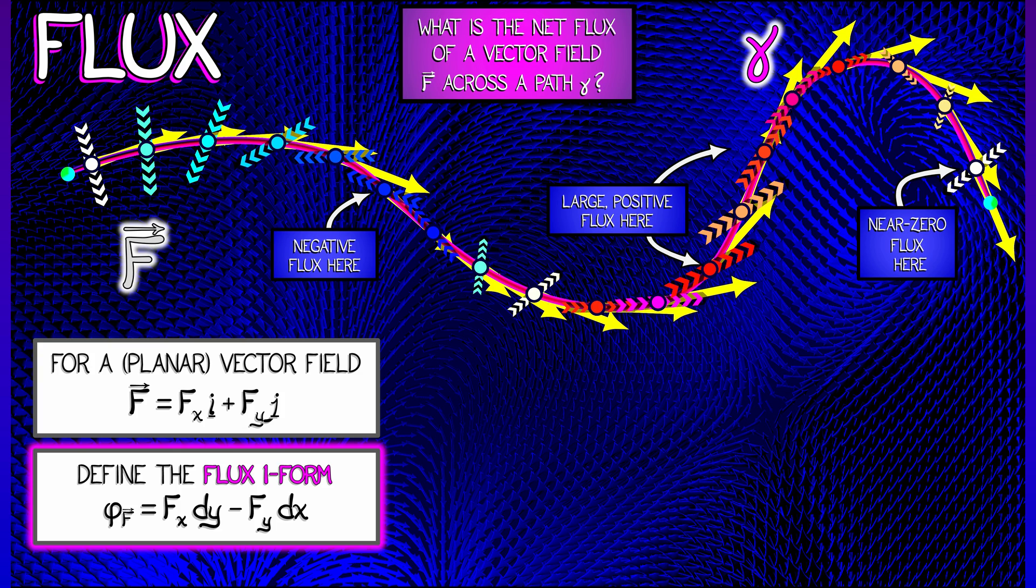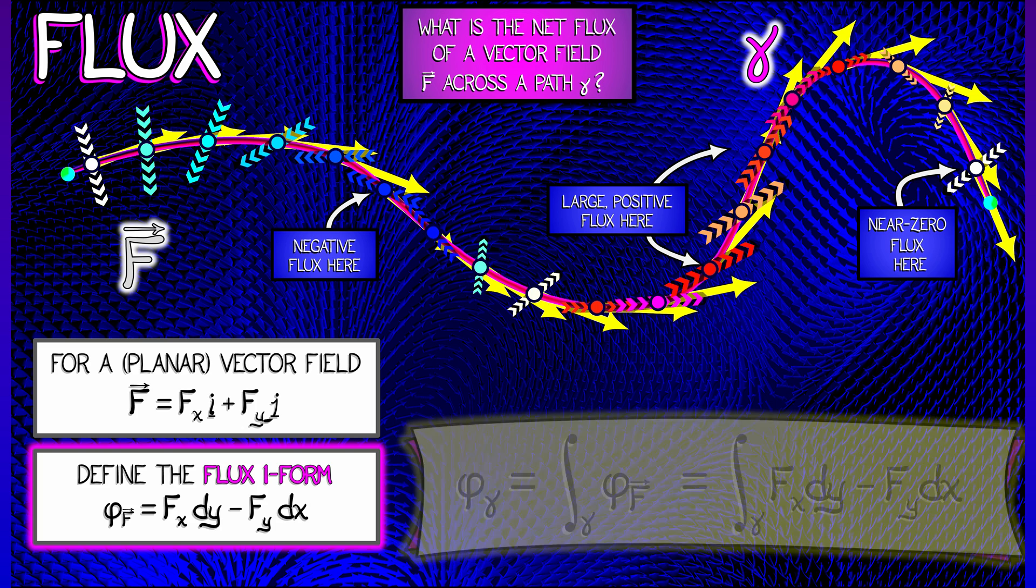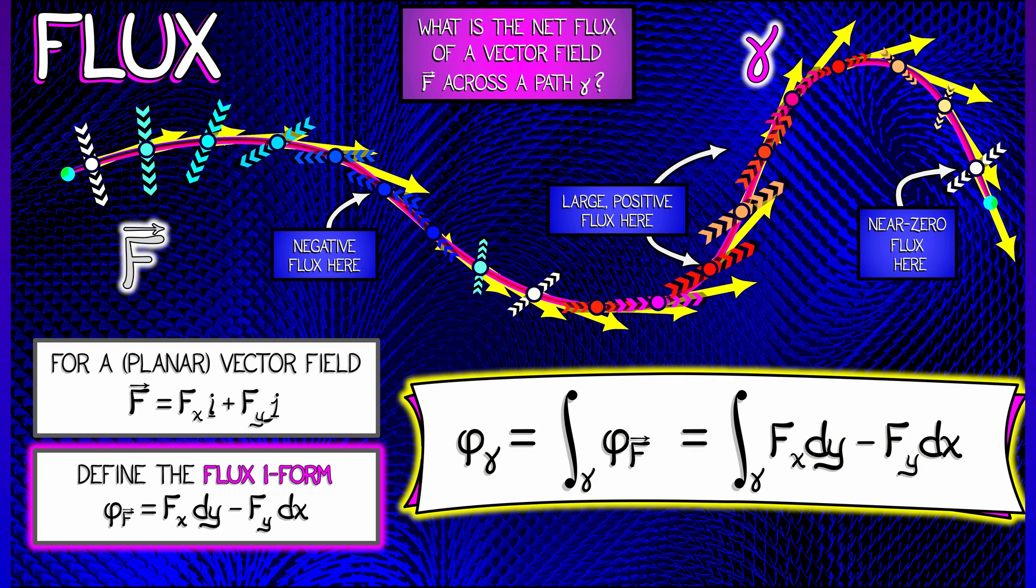If you want to know the net flux along a path—some places positive, some negative—what do you do? You add it up. You integrate φ_f over gamma. You integrate f_x dy minus f_y dx. That's a different way to integrate a one-form field and get something physically interesting.